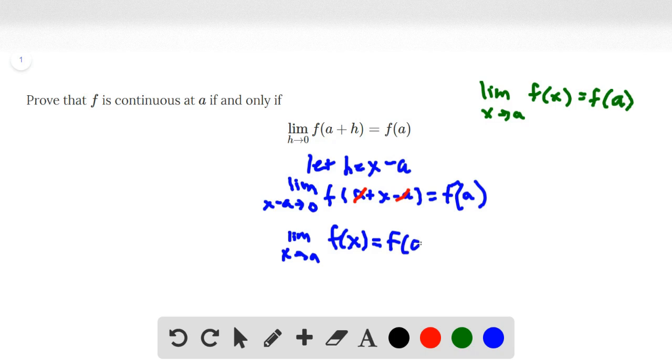So essentially what we have is that at the beginning, this is another way of saying the definition of continuity. It is written using h instead of x, using this conversion h equals x minus a. So we were able to show that this is equivalent to the definition of continuity, and thus f is continuous at a for this reason.